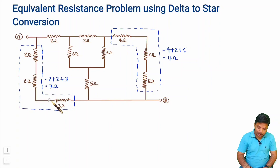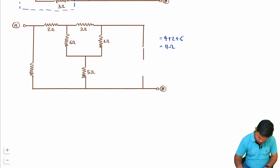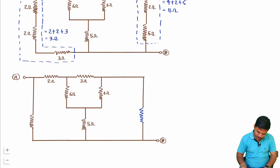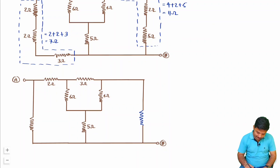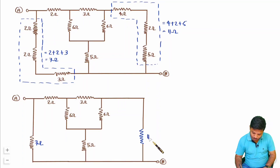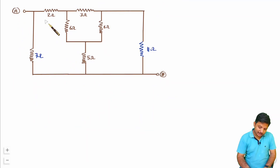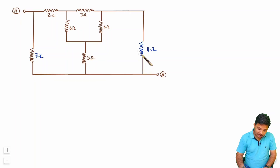Now I will redraw this circuit by replacing these series groups as single resistors. I will replace the first group of 3 resistors as 7 ohm, and I will replace the other 3 resistors as 11 ohm. Now let us see whether anything is there in series or parallel. I don't see anything in series and parallel, so now I need to go for star and delta conversion.